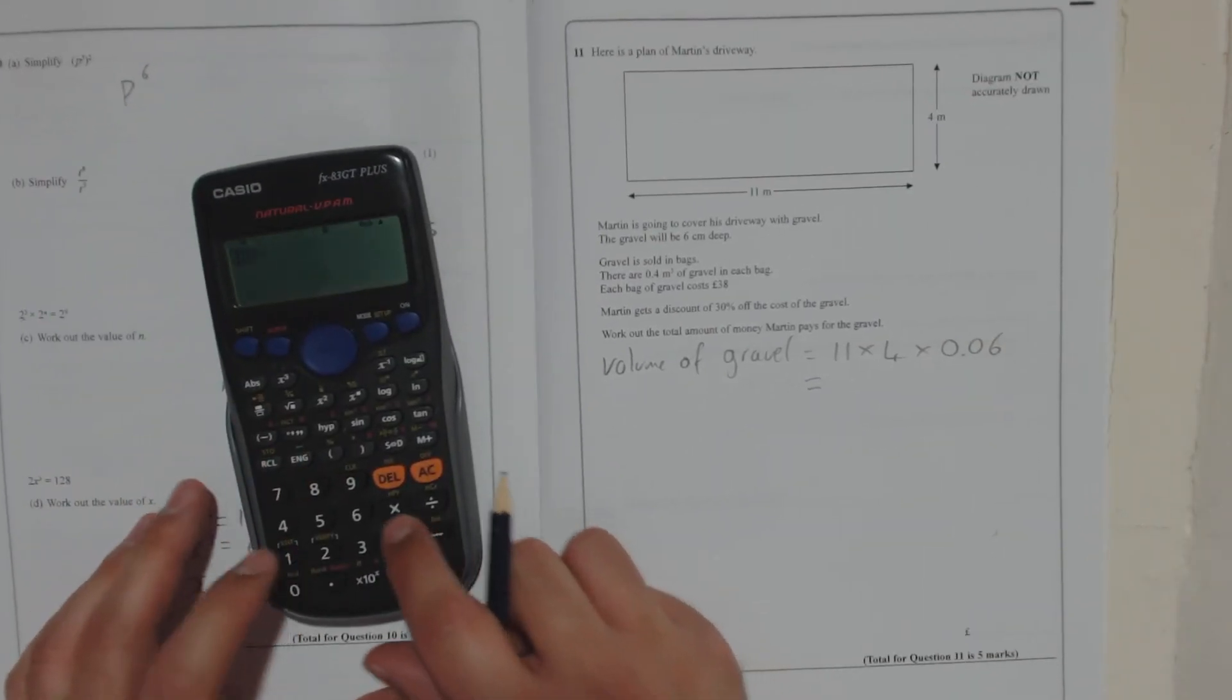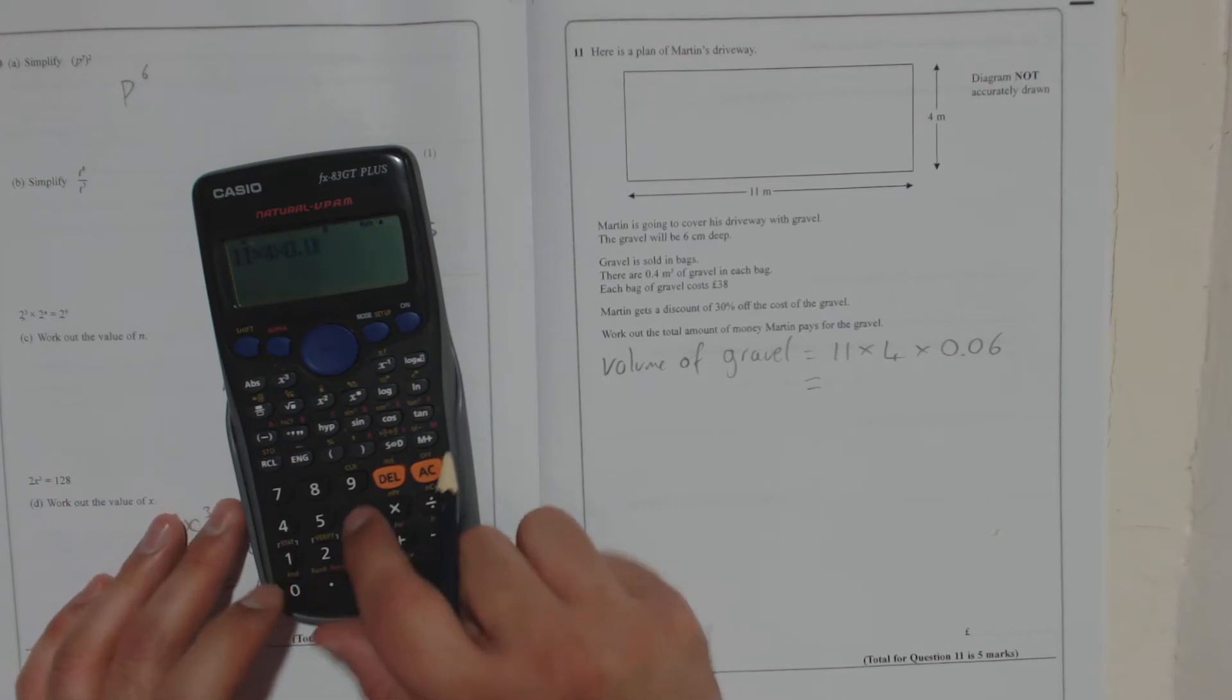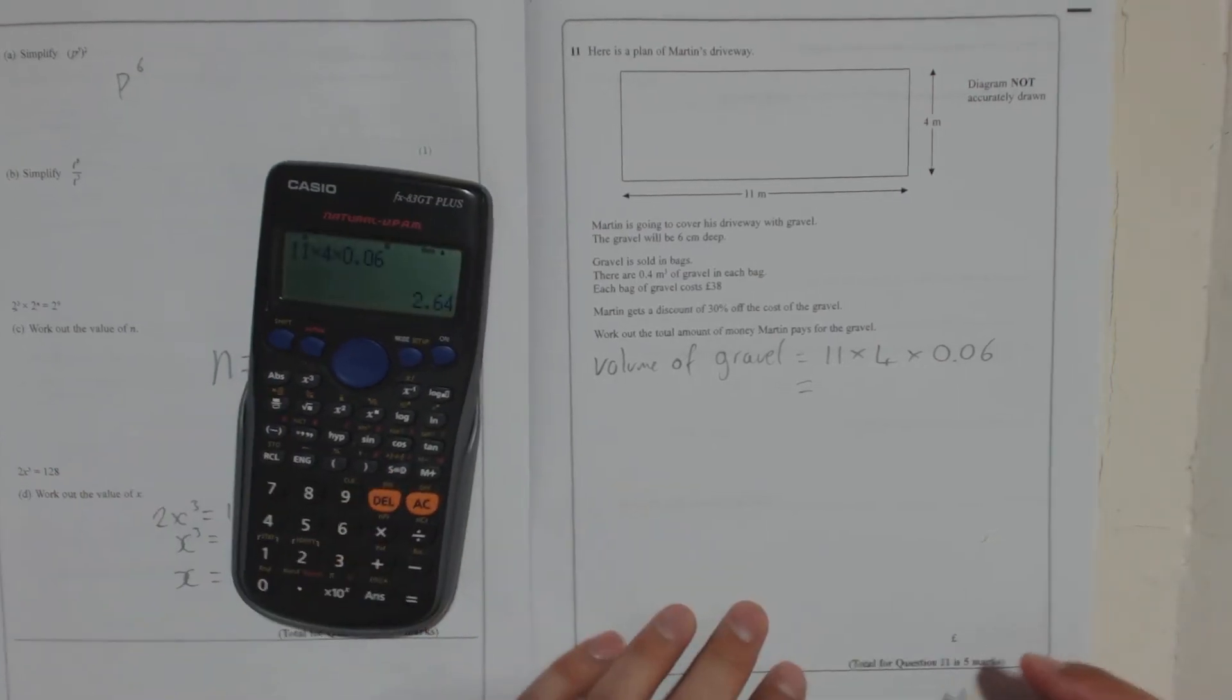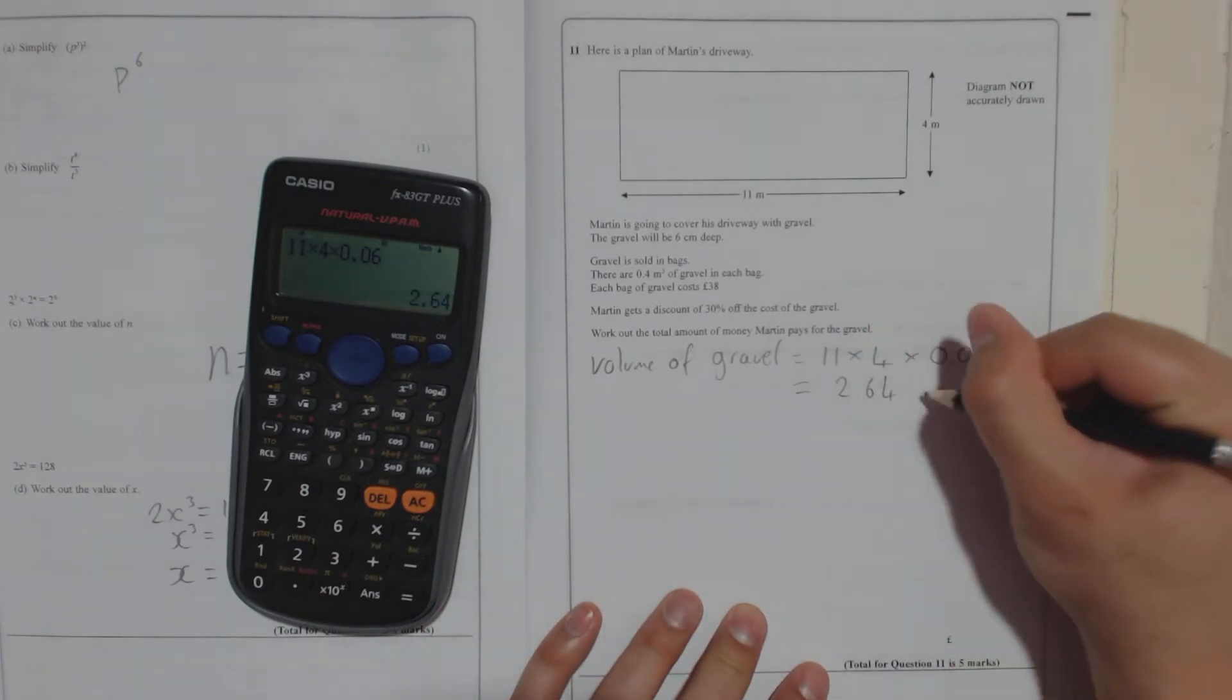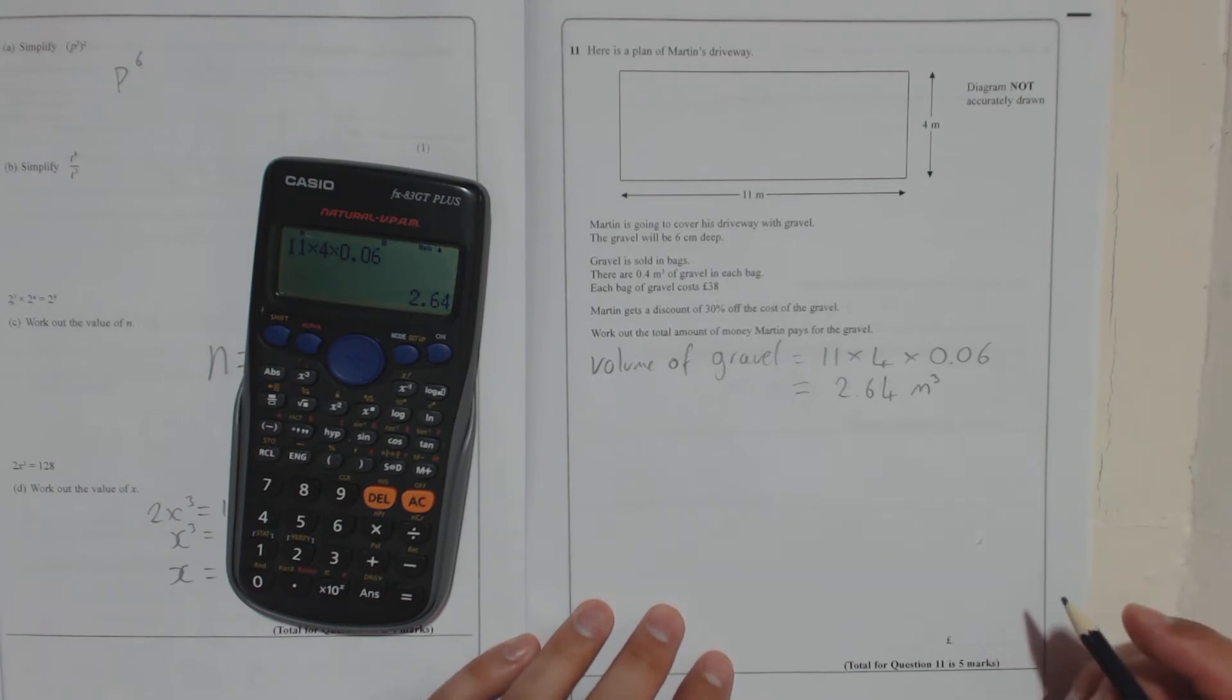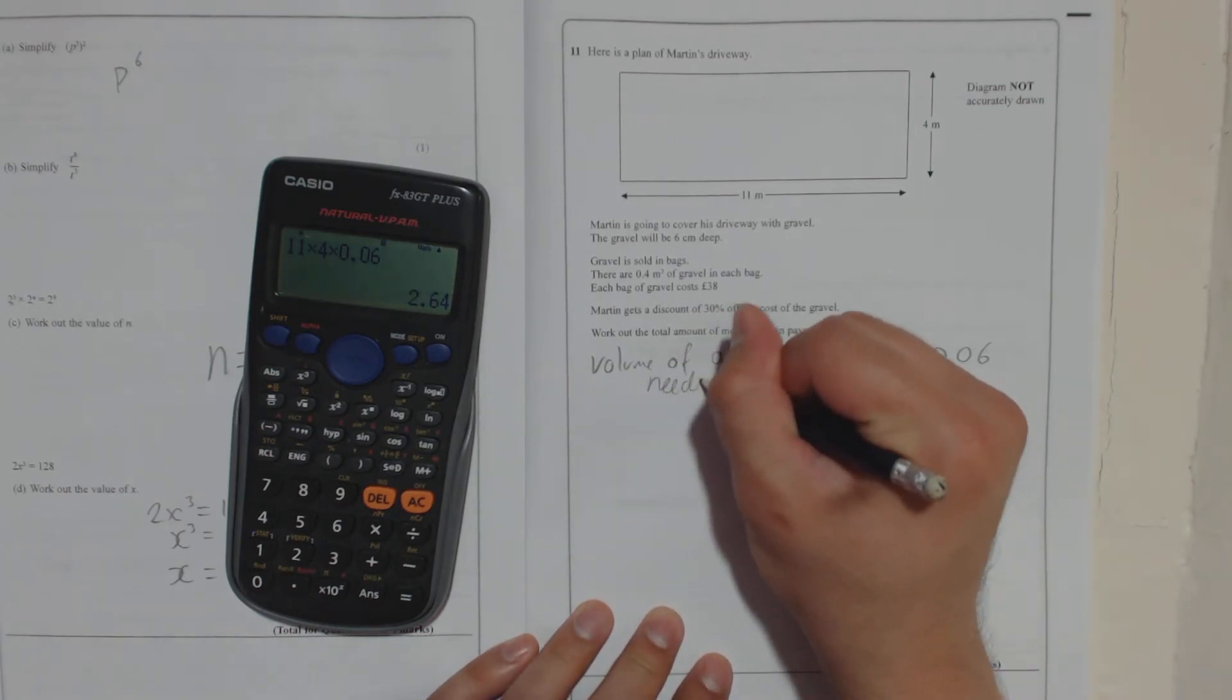11 times 4 times 0.06 is 2.64 metres cubed. So that's how much gravel he needs.